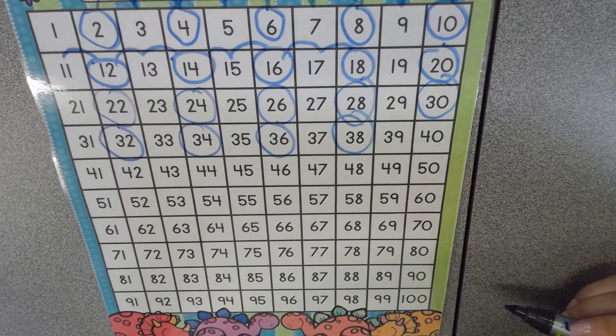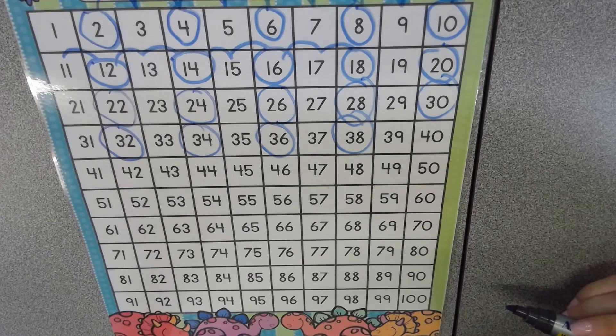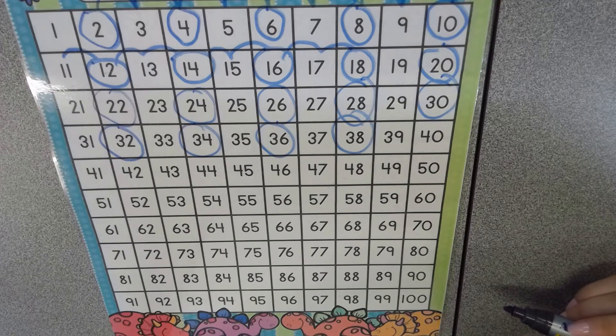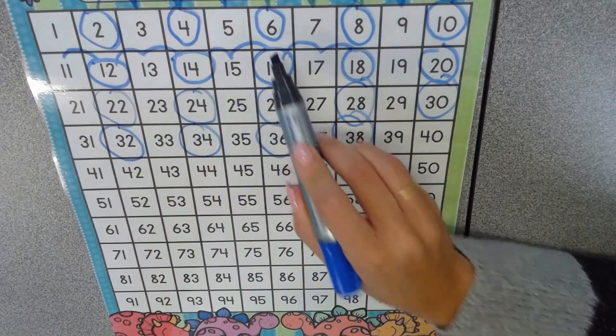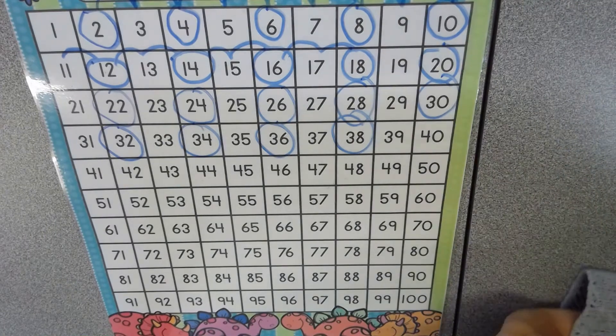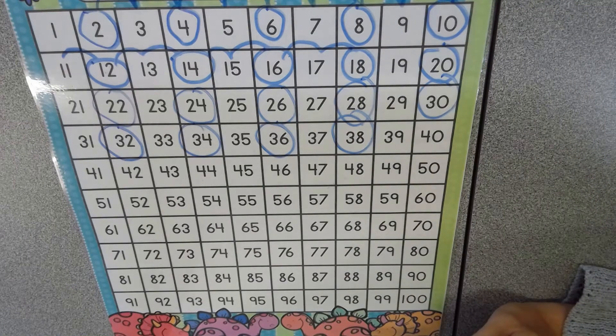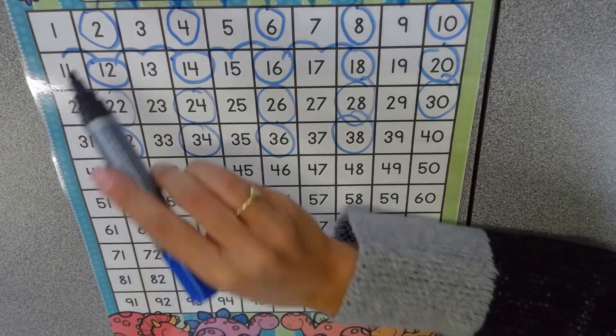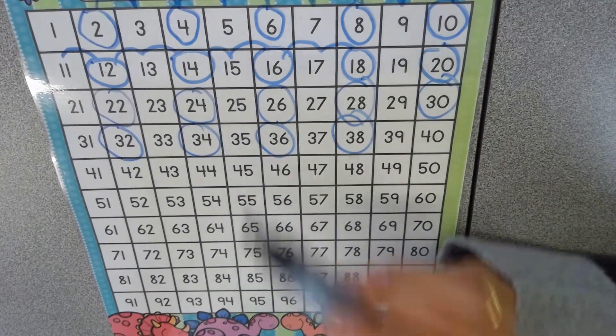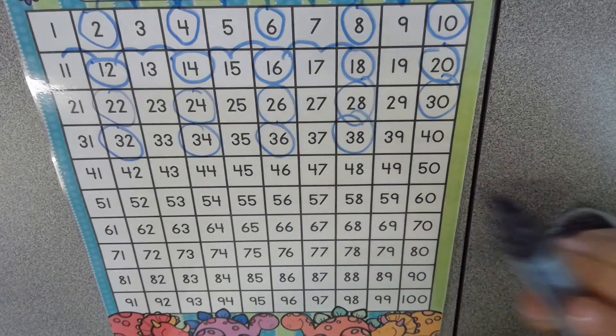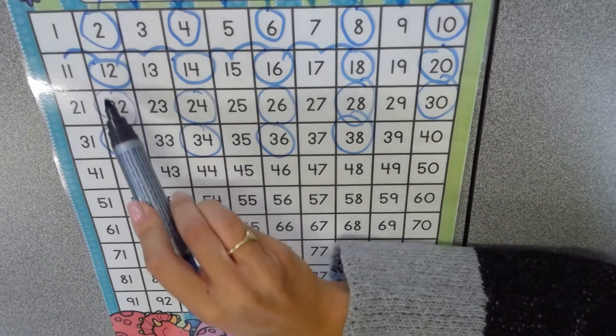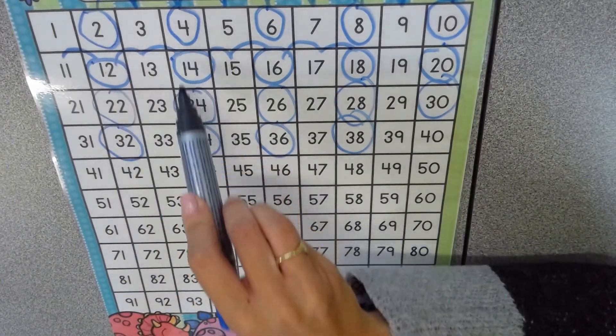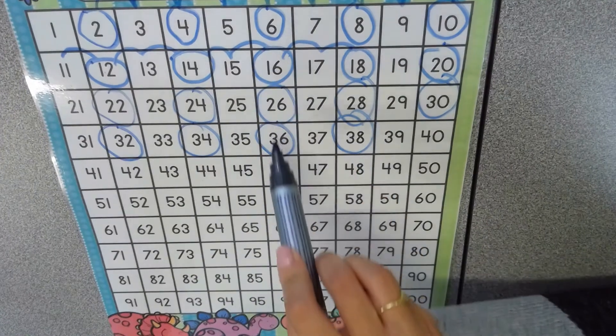When we skip count by twos, we can see some interesting patterns forming. First of all, the numbers that are in the two skip counting pattern are what we call even numbers. They end with two, four, six, eight and zero.